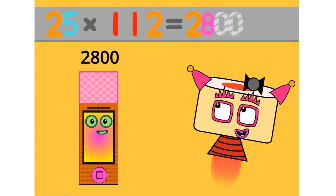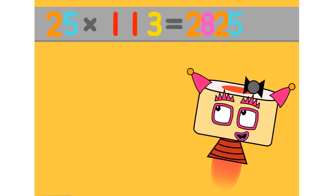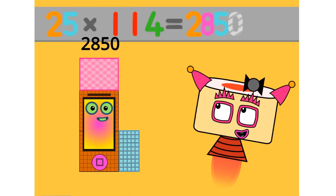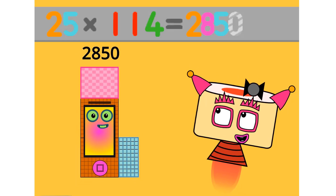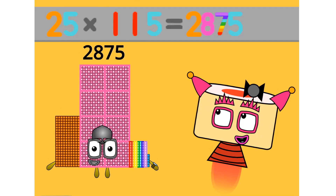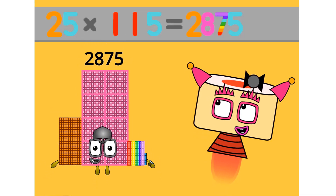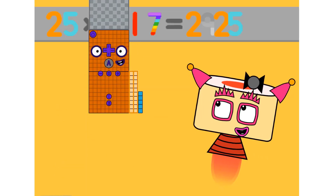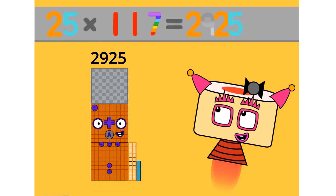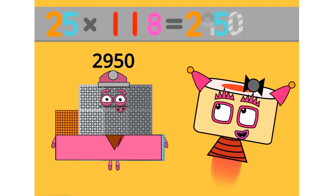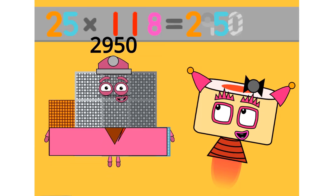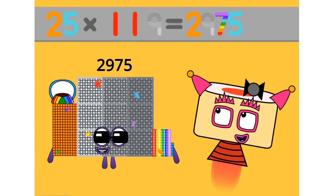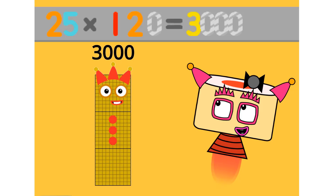25 times 112 equals 2800. 25 times 113 equals 2825. 25 times 114 equals 2850. 25 times 115 equals 2875. 25 times 116 equals 2900. 25 times 117 equals 2925. 25 times 120 equals 3000.